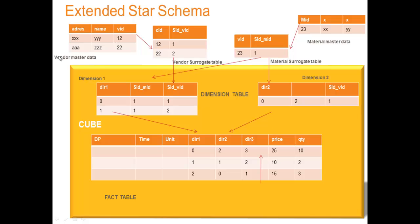If you take a dimension table here, we have a vendor master with a vendor ID. Between the dimension tables, there is another table called the surrogate table. In between these two dimensions, you have a surrogate table. These surrogate tables are outside your cube, so the data will be stored outside your cube.